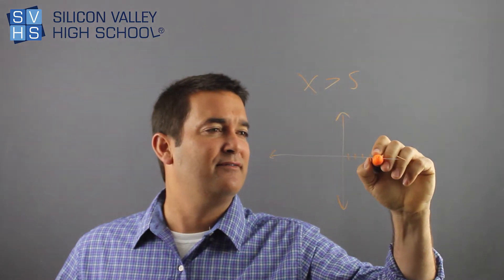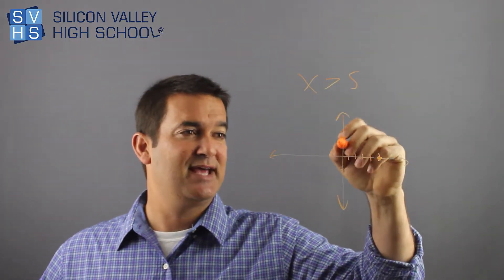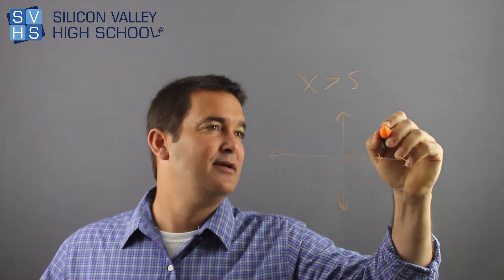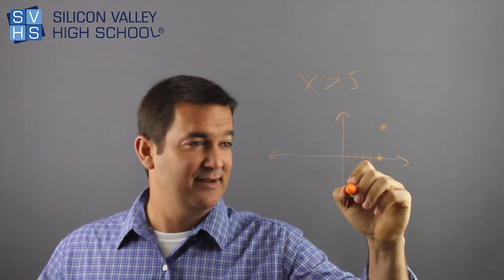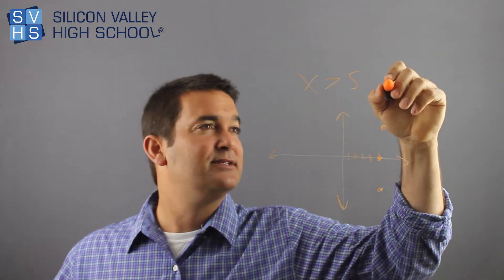You go to x is 5: 1, 2, 3, 4, 5, put a dot. X is always going to be 5. So this actually, even if y was 10, x is 5. If y was negative 10, x is 5. Solid or dotted? This is a dotted line.